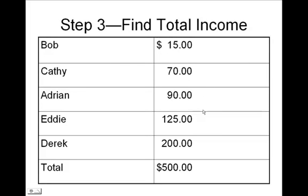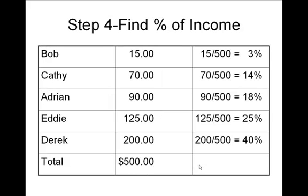Find the total amount of income in the economy. In this case, there are five people who make up the economy. Then find the percent each income earner earns. So here, you can see that Bob makes 3 percent, Kathy makes 14 percent, and you can see the rest of the income earners by percent.